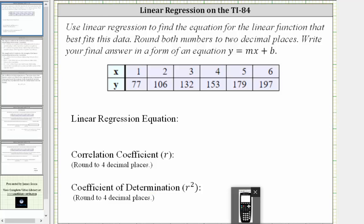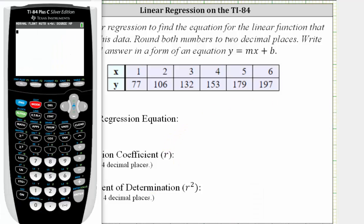Using the TI-84, the first step is to turn the diagnostic tool on so that we are given r and r squared. To do this, we need to go to the catalog and select diagnostic on.